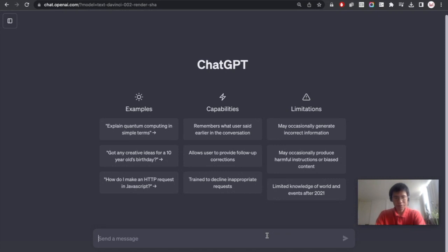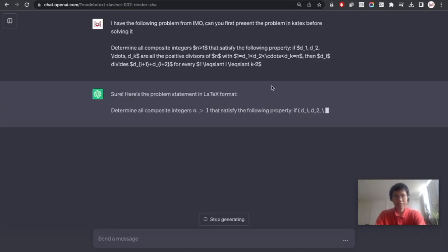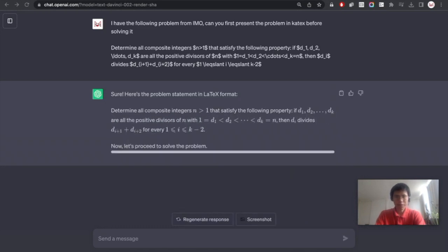First of all, I'm going to copy-paste the problem and let it repeat it. So the problem is we are going to find all the positive composite integers n for which we can list out its positive divisors in ascending order, d1 equals 1 smaller than d2 until dk equals n, such that di divides di plus 1 plus di plus 2. So the previous divisor divides the sum of the next two divisors.